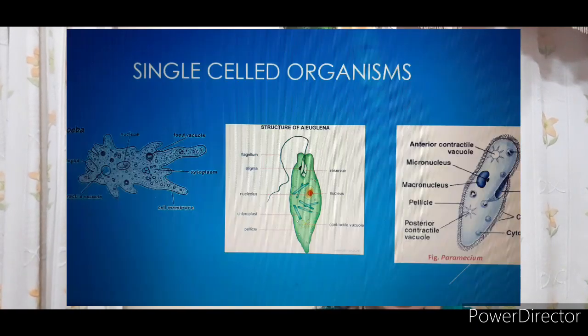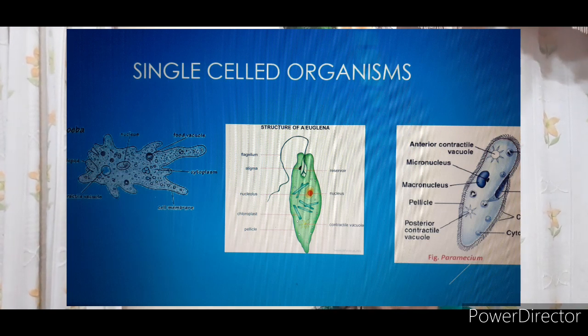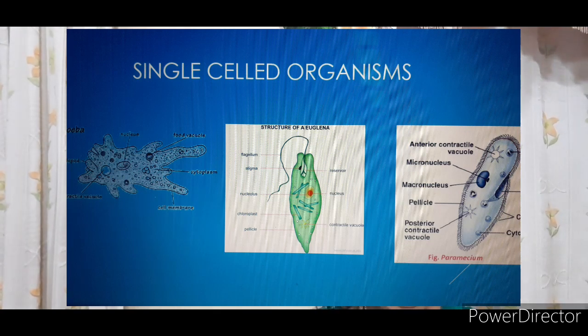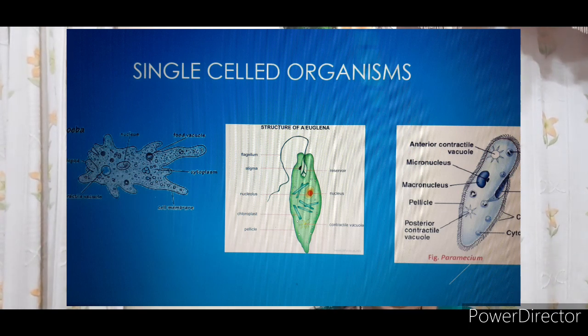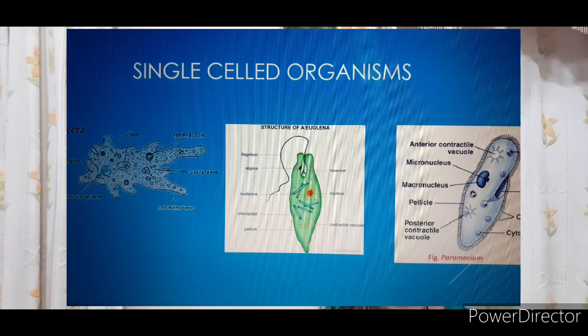Every individual organism will die — no individual is immortal. But some single-celled organisms like amoeba, paramecium, euglena, bacteria, etc., do not have a natural death. Why do we say there is no natural death in single-celled organisms? In these single-celled organisms, cell division takes place.